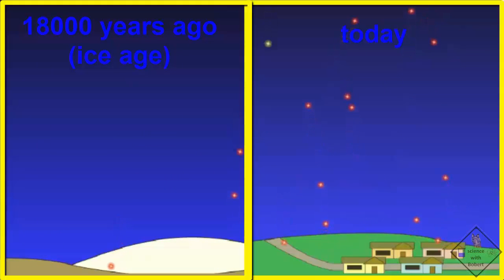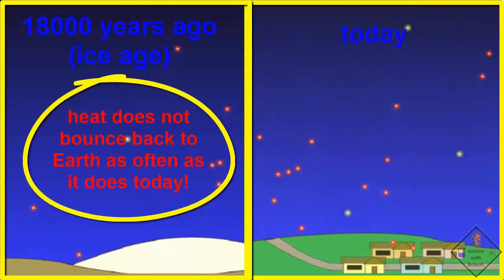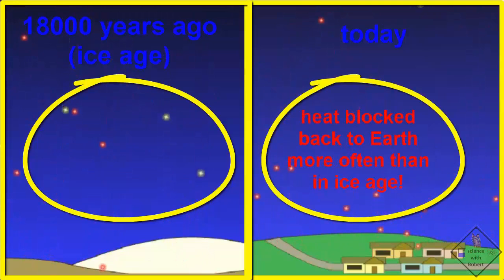Earth's last ice age peaked about 18,000 years ago. Carbon dioxide levels were much lower than they are today, roughly 30% lower. So the pinball effect on heat from carbon dioxide didn't occur as much as it does today. A lot of heat escaped our atmosphere 18,000 years ago.